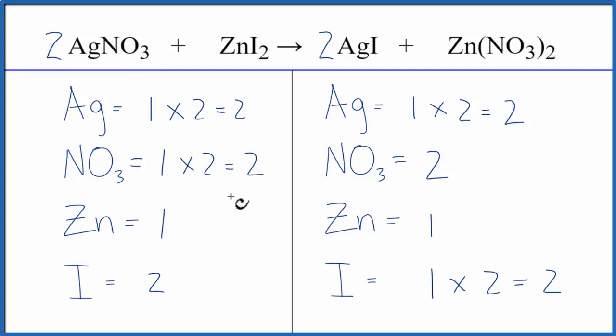and this equation is balanced. So when we count the nitrate, because we have this NO3 here and here, we can count it as one item. That makes the balancing a lot easier. This is Dr. B with the balanced equation for AgNO3 plus ZnI2. Thanks for watching.